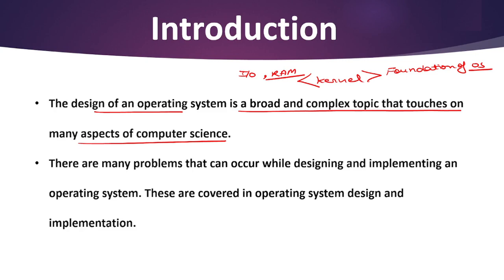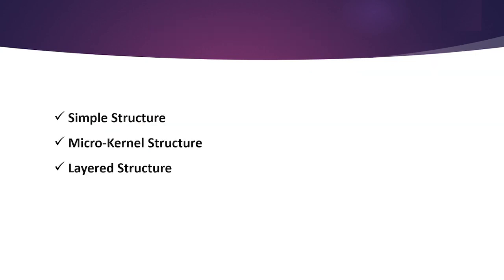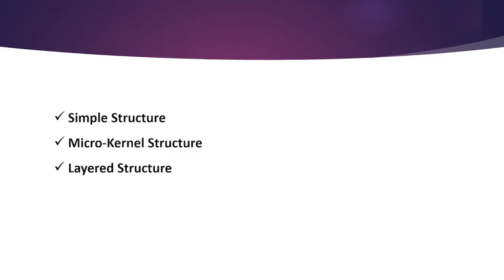The operating system may be implemented with the assistance of several structures. We have three structures, and these structures of the operating system are mostly determined by how the internal and common components of the operating system are integrated and merged into the kernel. Various structures include simple structure, microkernel structure, and layered structure. Before moving to these three structures, let's look at some simple steps in designing the system.